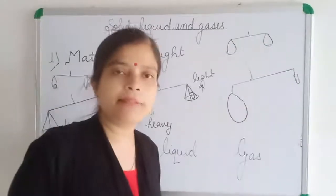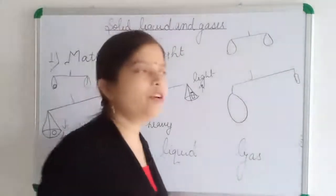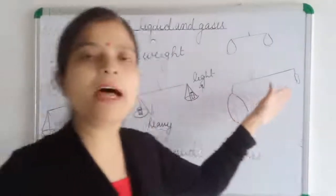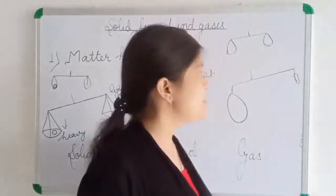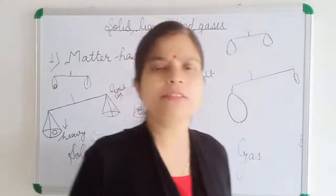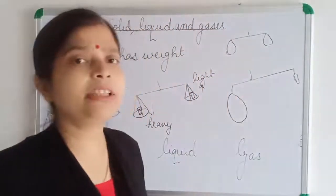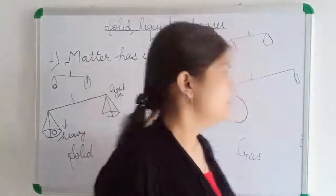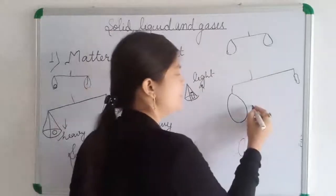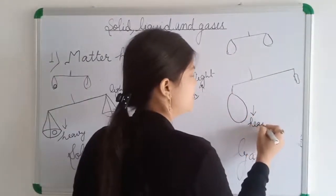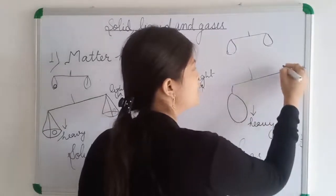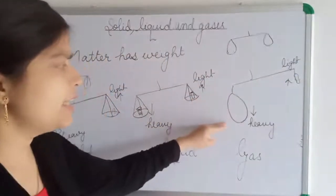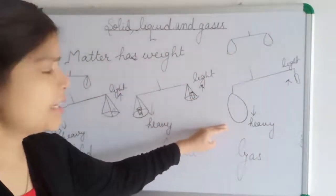Now we will do the same type of experiment with gas. What we will do is tie a balloon on both sides of the balance. One side has a balloon that is not filled with any gas, and the other side has a balloon that is filled with gas. You will find that the balloon filled with gas is heavier than the unfilled balloon. From this we can find that gas also has weight.